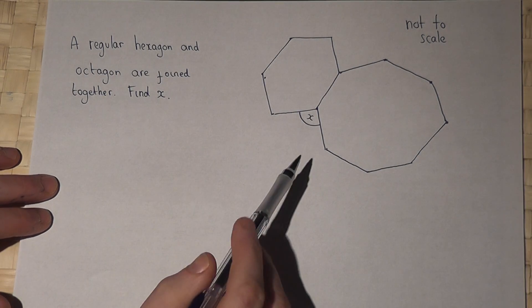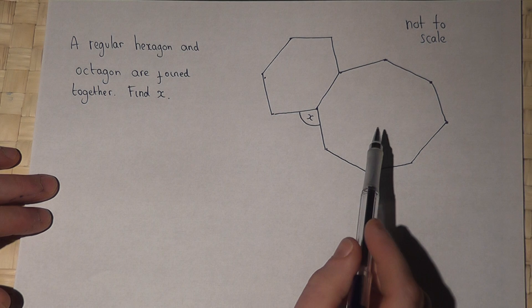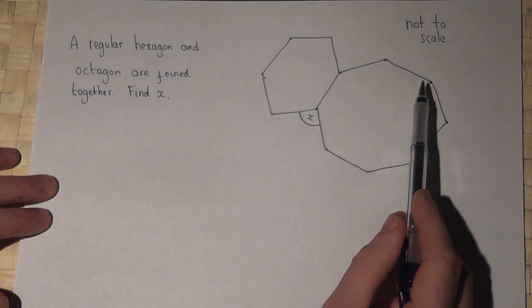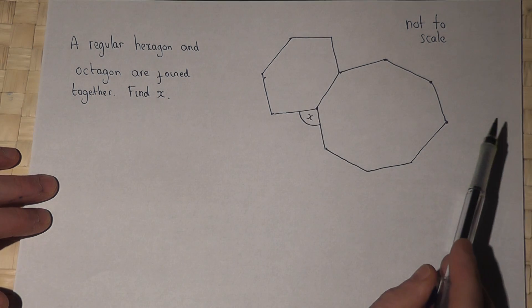In this question, we've got a regular hexagon and a regular octagon joined together. This is not drawn to scale on purpose, so you cannot just measure the angles, hence the sort of distorted view of the two shapes.